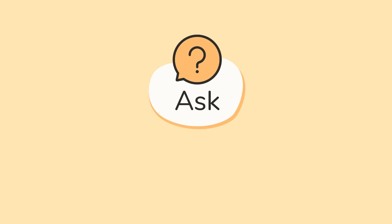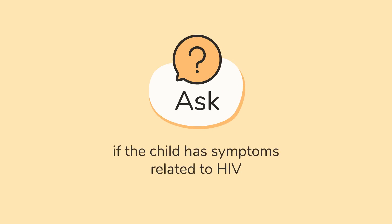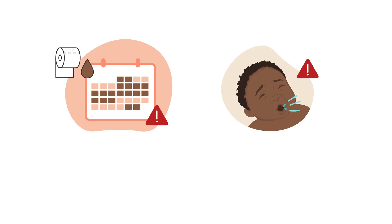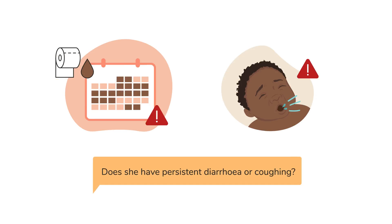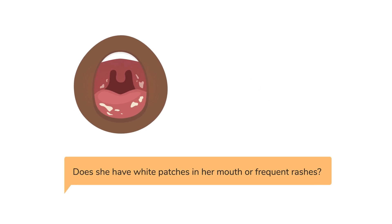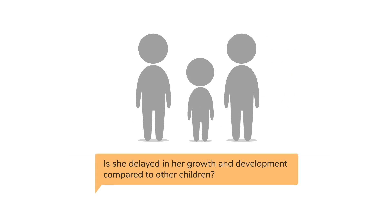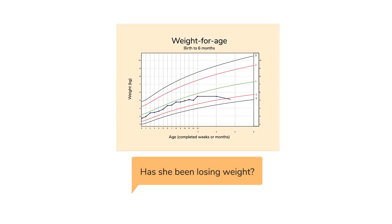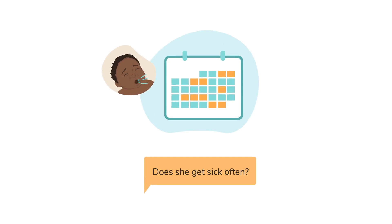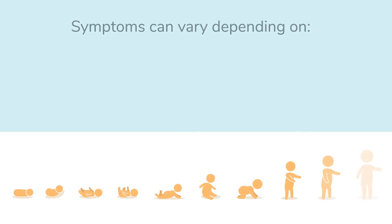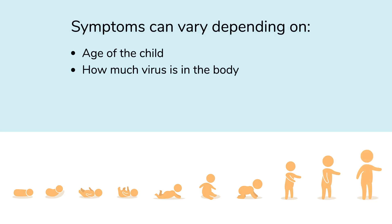Second, ask if the child has symptoms related to HIV. You can ask: does she have persistent, meaning ongoing, diarrhea or coughing? Does she have white patches in her mouth or frequent rashes? Is she delayed in her growth and development compared to other children? Has she been losing weight? Does she get sick often? These are common symptoms of HIV, although the symptoms can vary depending on the age of the child and how much virus is in their body.